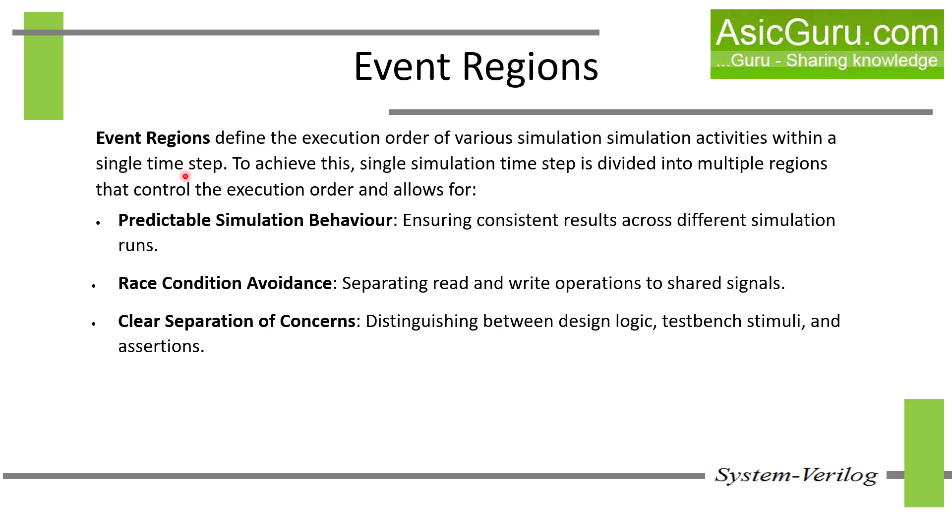This division allows for predictable simulation behavior, ensuring consistent results across different simulation runs — each region defines which event will occur in which region. For race condition avoidance, it separates read and write operations. If two blocks are writing and reading the same variable at the same simulation time, this may lead to a race condition. But because of different event regions in SystemVerilog, it prevents simultaneous access to the same signal and hence avoids race conditions.